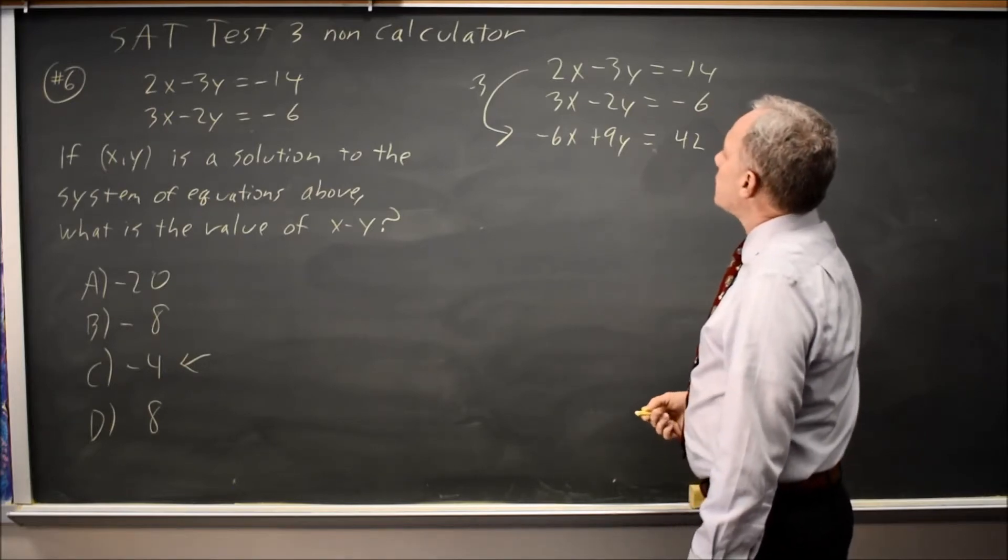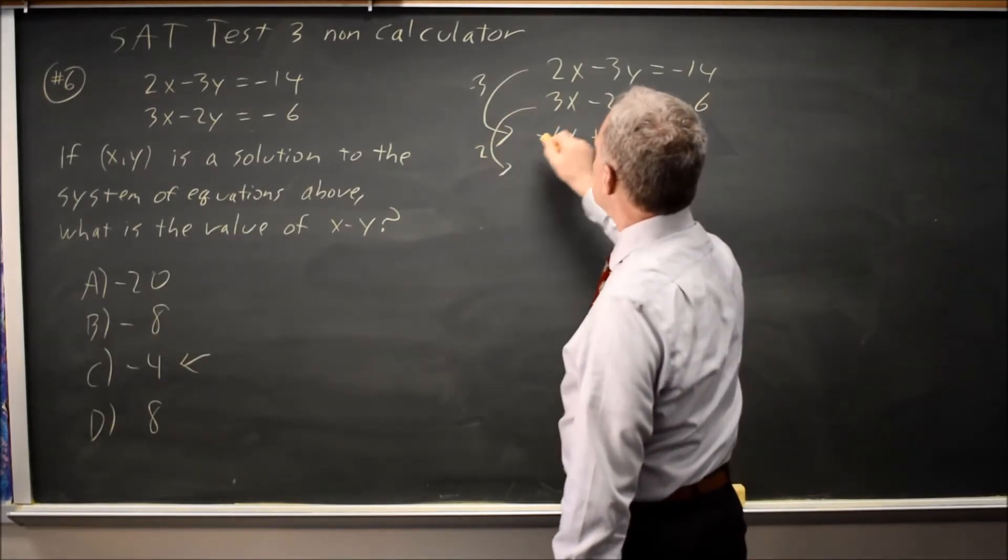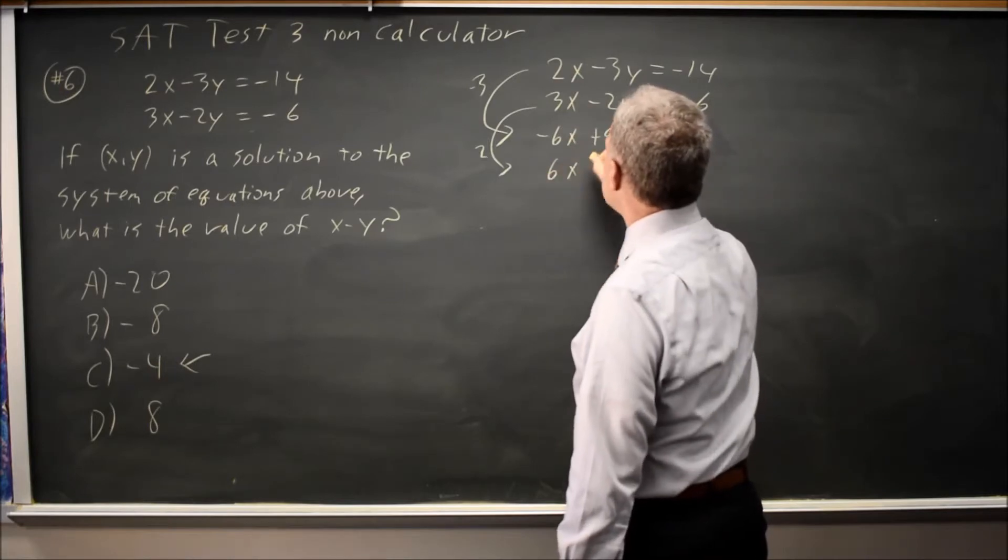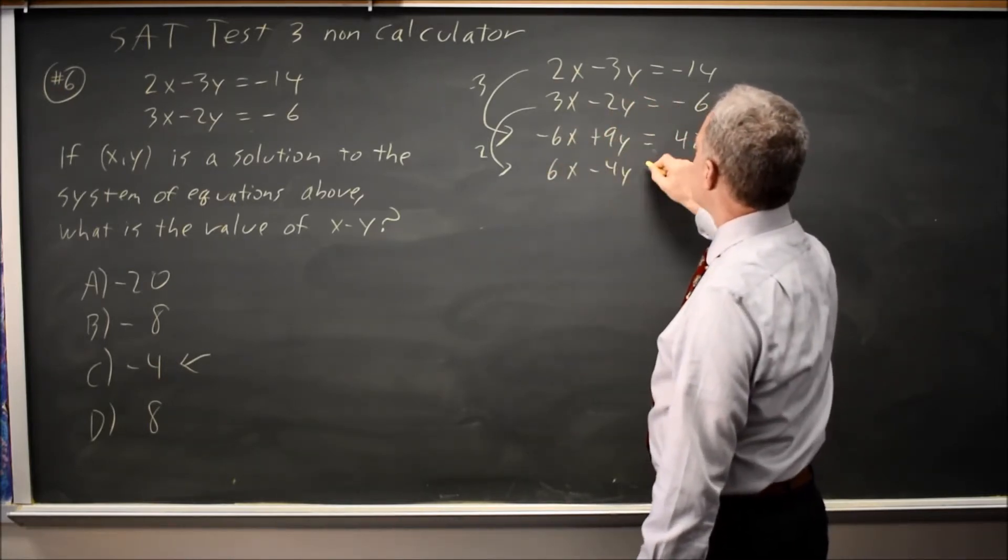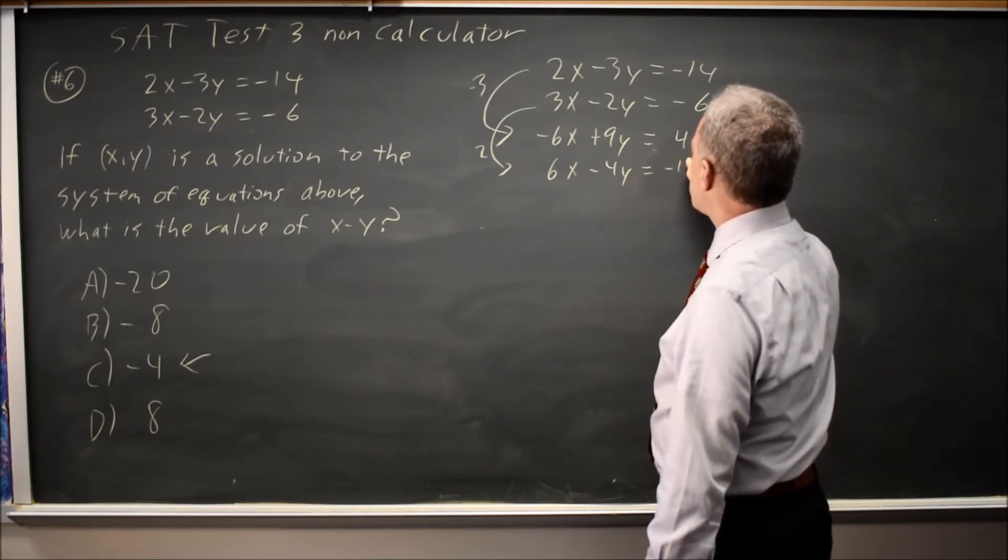If I multiply the second equation through by positive 2, 3x times 2 is 6x. Negative 2y times 2 is negative 4y. Negative 6 times 2 is negative 12.